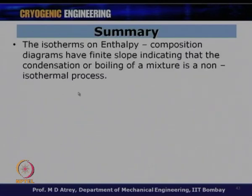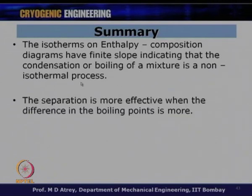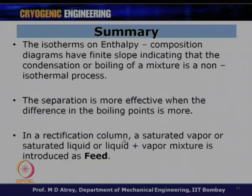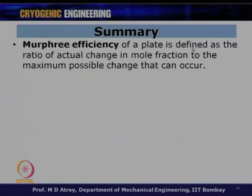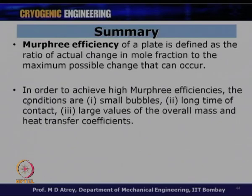To summarize: isotherms in the enthalpy composition diagram have finite slope, indicating that condensation or boiling of a mixture is a non-isothermal process. Separation is more effective when the difference in boiling points is larger. In a rectification column, saturated vapor, saturated liquid, or a liquid-vapor mixture is introduced as feed. Murphy efficiency of a plate is the ratio of actual change in mole fraction to the maximum possible change. To achieve high Murphy efficiency, ensure small bubbles, long contact time between vapor and liquid, and large overall heat and mass transfer coefficients.